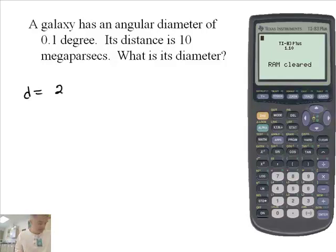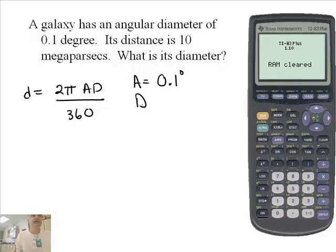Well, the d, the diameter, is equal to 2π times AD over 360. OK, what do we know? Well, A is the angular size. So that's 0.1 degrees. OK, and D is the distance to the galaxy, which is 10 megaparsecs.